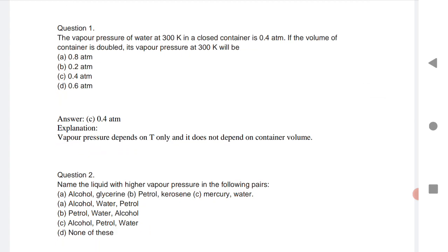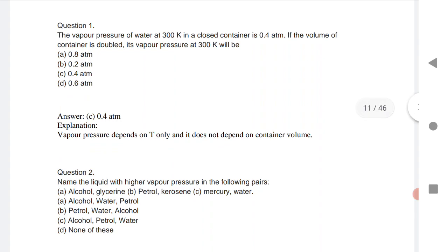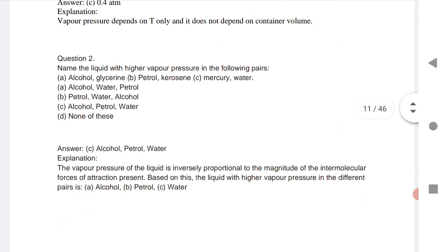Next is: name the liquid with higher vapor pressure in the following pairs - alcohol, petrol, and water. These are the liquids which have higher vapor pressure.